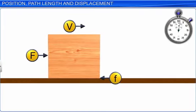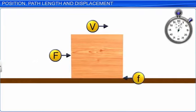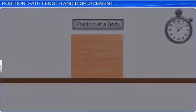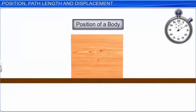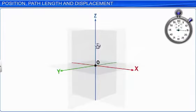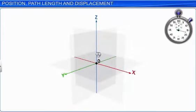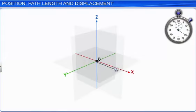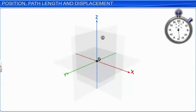In kinematics, we study the motion of bodies without considering the forces that cause the motion. Let us first understand what is meant by the position of a body. The position of a body in space is denoted by three coordinates: X, Y, and Z. The path length and displacement of a body depend on how its position changes with time.